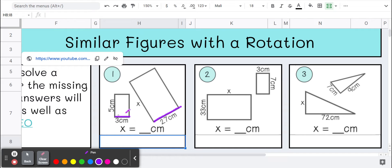We have measurements on both of these shorter sides. To go from 3 to 27, what are we multiplying by?